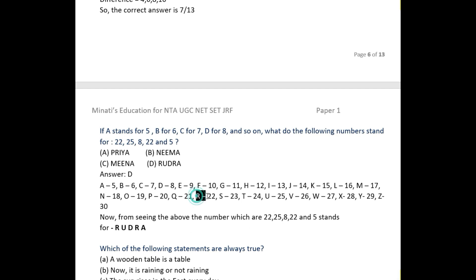See now, 22 means R, 25 means U, 8 means D, and so on. The answer will be RUDRA. Option D is the right answer.